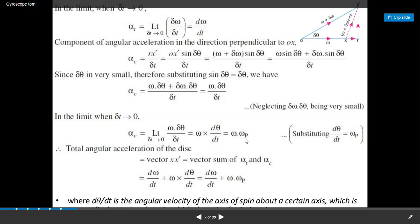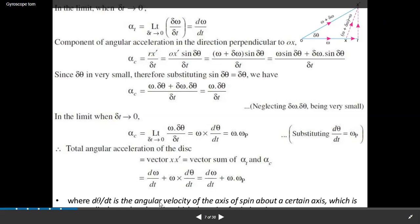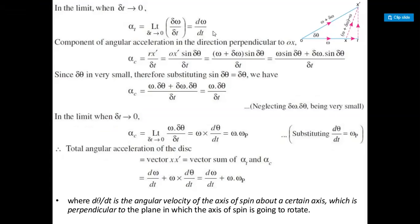The total angular acceleration is the vector XX-dash, equal to the vector sum of alpha_t plus alpha_c — that is, the tangential component and the Coriolis component. So the total equals d omega / dt + omega × (d theta / dt) = d omega / dt + omega × omega_p, where d theta / dt is the angular velocity of the axis of spin about an axis perpendicular to the plane in which the axis of spin is rotating.